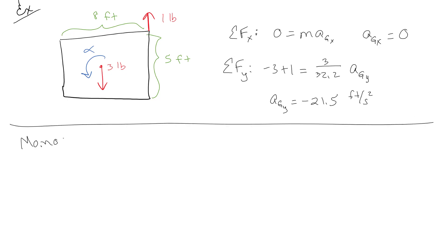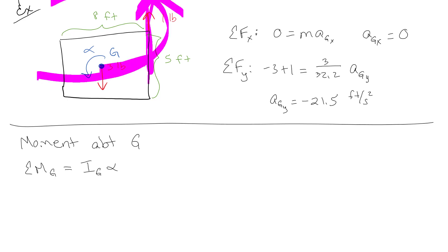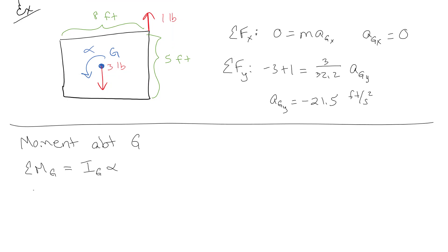Again there are two ways to do the moment equation — about G or about P — and we should get the same answer both ways. Taking the moment about G: the 1-pound cable is 4 feet away creating a positive rotation, so 4 times 1 equals I_G·alpha, where I_G equals (1/12)·(3/32.2)·(8²). Solving, we get alpha equals 5.79 radians per second squared.